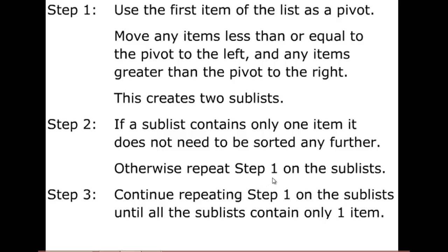Otherwise, we treat each sub-list now as a separate list and repeat step one. We use the first item as a pivot, and we place the items less than or equal to it to the left, and any items greater than it to the right. We continue doing this until all the sub-lists contain only one item, and at that point our list will be sorted.